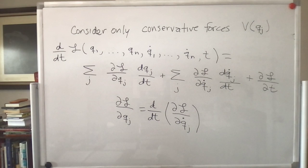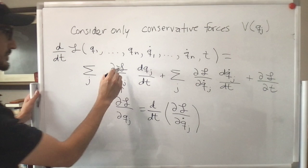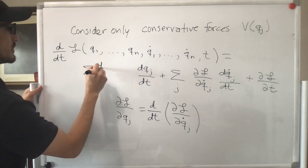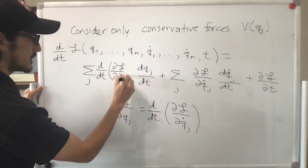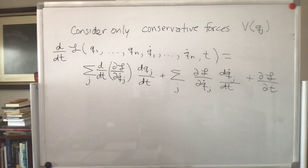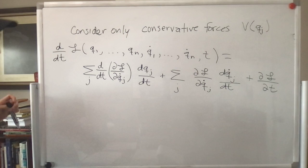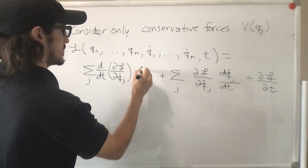That means we can substitute this in. So it's going to be the derivative with respect to time of the partial derivative of the Lagrangian with respect to qj, times that term. We just use the definition of the Euler-Lagrange equation in there, and dqj/dt is just qj-dot.